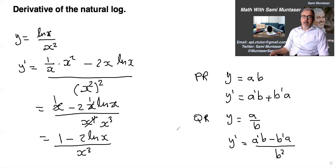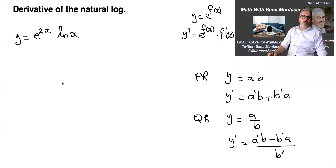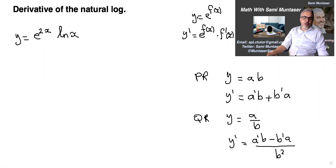Here's another one involving e to the power of 2x. The rule for e: if y equals e to the f(x), then y prime equals e to the f(x) times the derivative of f(x), which is f prime of x — that's the chain rule.